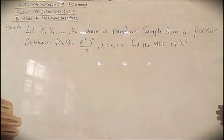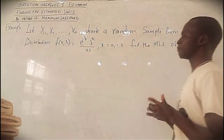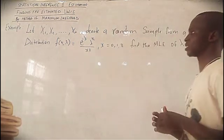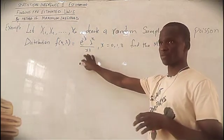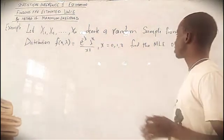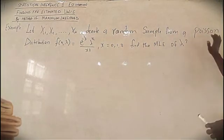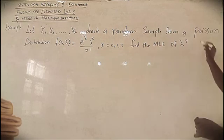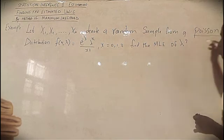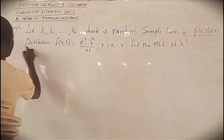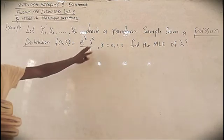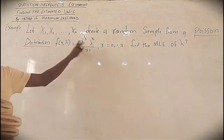So now, the most fundamental step is first of all to identify the distribution. Though it has been given here, in case the distribution function is not given, the first thing you should do is to identify which distribution you were given. This is a Poisson distribution, so you need to use its distribution function.